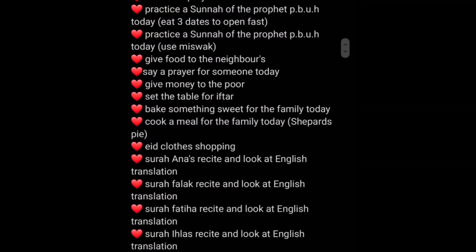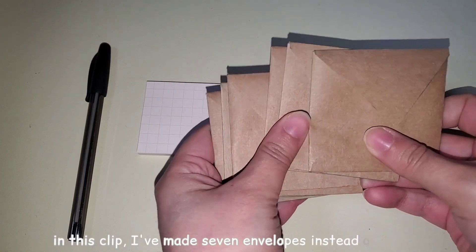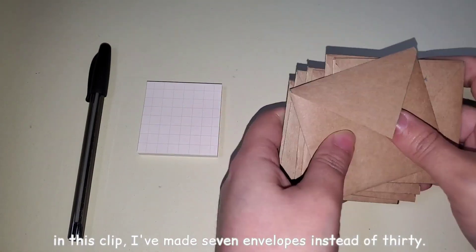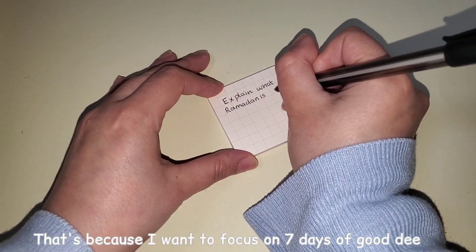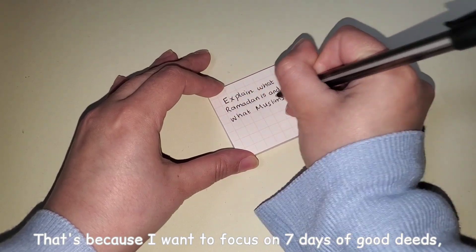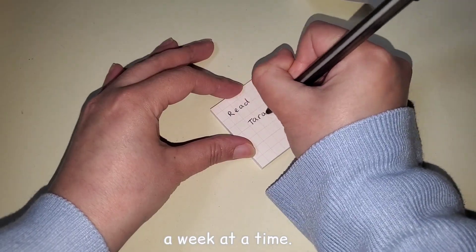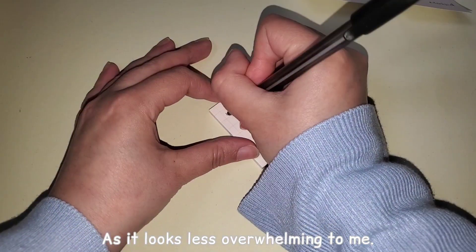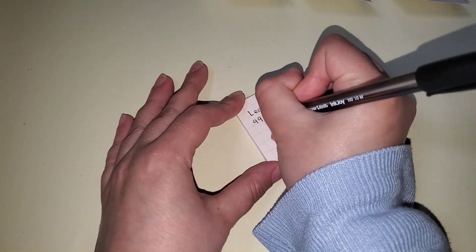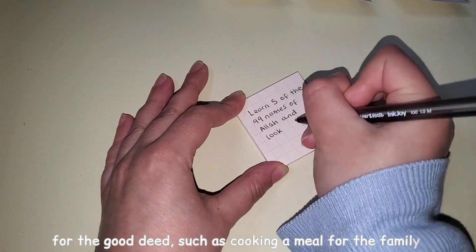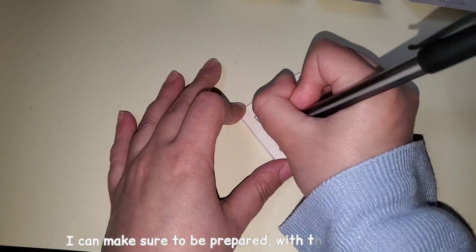So as you can see in this clip, I've made seven envelopes instead of 30 for the 30 days of Ramadan. That's because I want to focus on seven days of good deeds at a time, a week at a time, as it looks less overwhelming to me. Also, if I need to prepare something in advance for the good deed, such as cooking a meal for the family, I can make sure to be prepared with the ingredients.